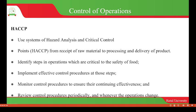The HACCP system can be applied from the receipt of raw materials to the processing and delivery of products. Here, we should identify the steps in the operation which are critical to the safety of food — areas or steps in the operation where contamination or hazards can easily occur. After identifying them, we have to implement effective control procedures at those steps.